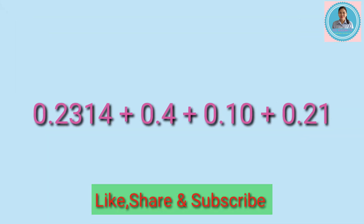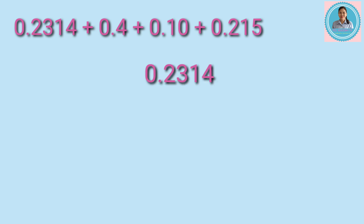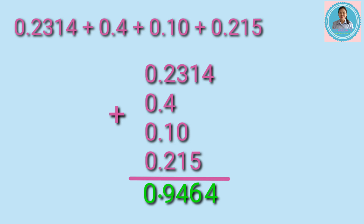Another example: let's add 2,314 ten-thousandths plus 4 tenths plus 10 hundredths plus 215 thousandths. Let's arrange the numbers in columns — this is the proper arrangement. Then let's add from right to left: bring down 4, then 1 plus 5 equals 6, then 3 plus 0 plus 1 equals 4, then 2 plus 4 plus 1 plus 2 equals 9. Since there is no whole number to be added, write 0 and then put the decimal point. The answer is 0.9464 — that is 9,464 ten-thousandths.